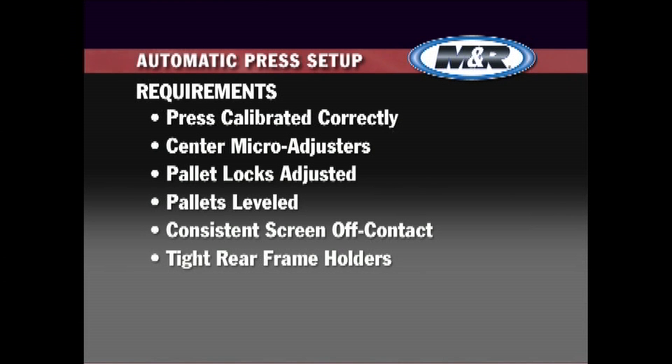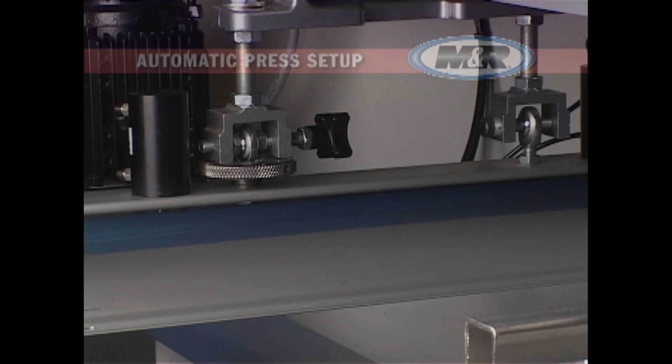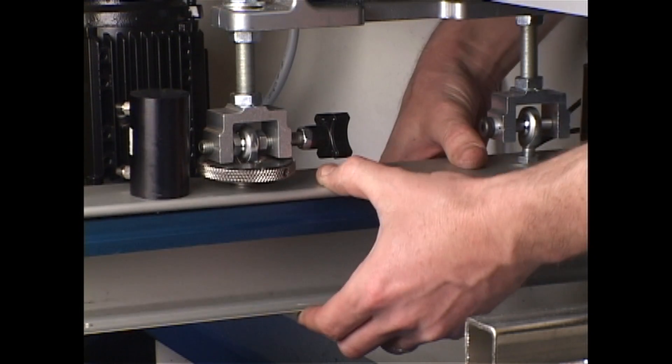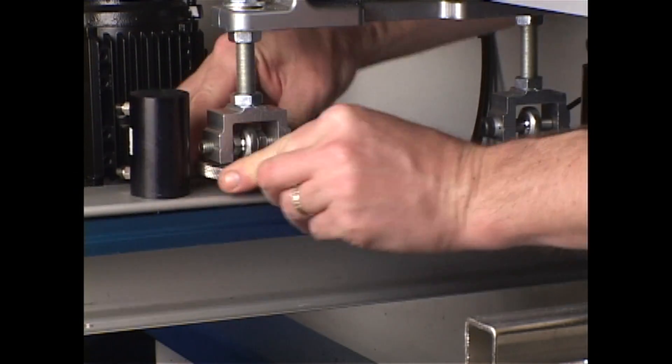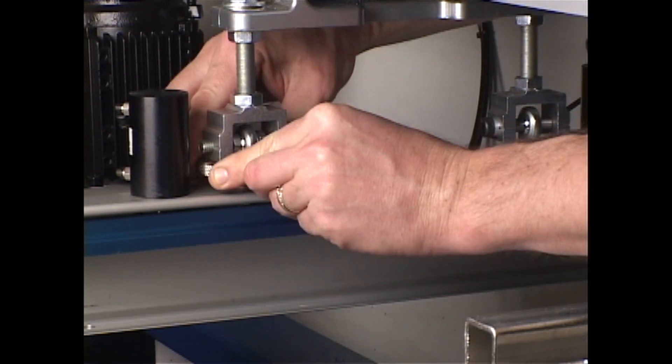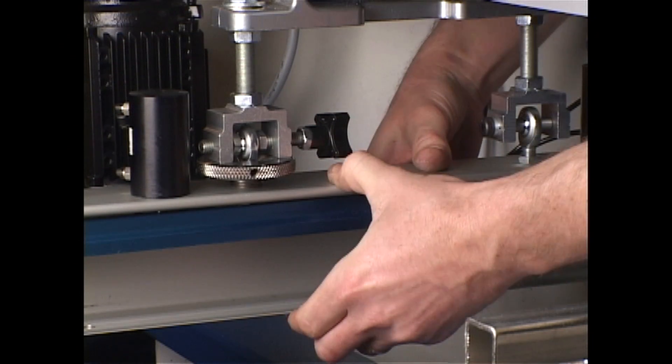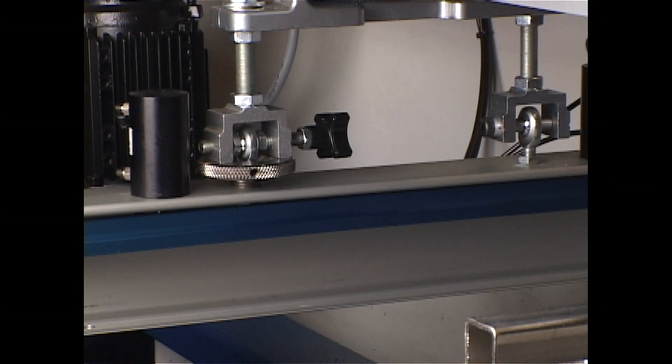Most current M&R presses equipped with rear micro-adjusters have a locking disc that holds the rear frame holder rigid when the micro-adjuster is not being used. It is important to check these locks for tightness. The rear frame holder extrusion should have no play or wobble in it. Any play in the rear frame holders during the Tri-Lock setup can directly affect registration accuracy.